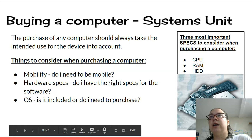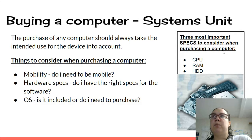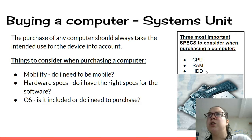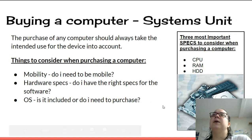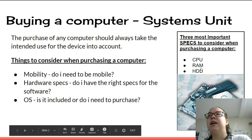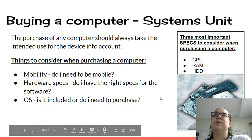In grade 11, we looked at the three most important specs to consider when purchasing a computer: the central processing unit, random access memory, and hard disk drive or storage — you can also get a solid state. Those are your most important. If you're a gamer, your graphics card is going to be pretty important as well.